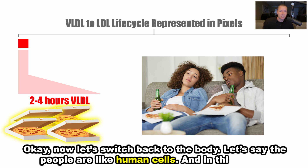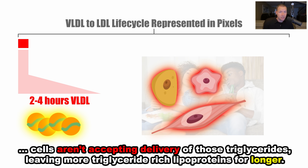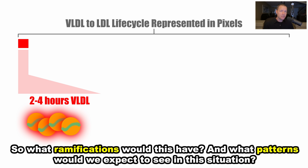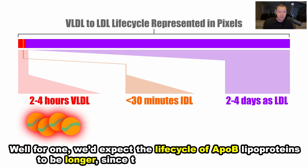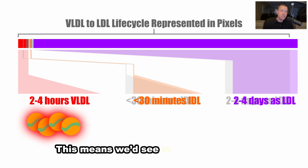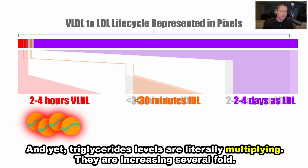Now let's switch back to the body. Let's say the people are like human cells. In this case, cells aren't accepting delivery of those triglycerides, leaving more triglyceride-rich lipoproteins for longer. So what ramifications would we expect to see? Well, for one, we'd expect the life cycle of ApoB lipoproteins to be longer since the turnover is taking longer. This means we'd see more total ApoB in circulation since they take longer to be cleared. And yet, triglyceride levels are literally multiplying — increasing several fold.